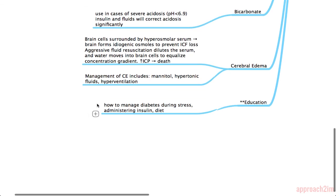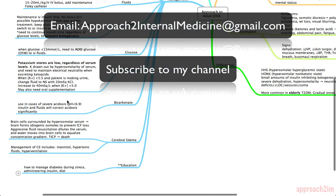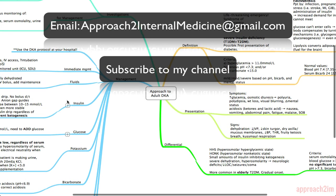Once the patient is stable, educate them on how to prevent DKA from happening again — make sure they know how to manage their diabetes during stress, how to administer their insulin, and counsel them about their diet. That's the approach to DKA. If you have questions, feel free to email, and don't forget to subscribe to the channel for more videos.